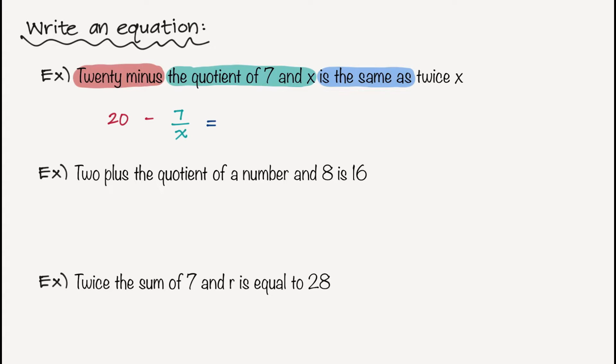And then when I see twice x, that means 2 times x, so I'm just going to write 2x. And that's my first equation. So 20 minus 7 over x is equal to 2x.